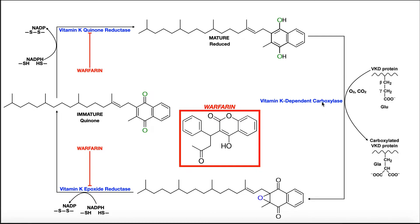Once this reaction carboxylates those clotting factors, the reduced or mature form of vitamin K is transformed into an epoxide. This epoxide is then reconverted back to the original quinone form of vitamin K by an enzyme called vitamin K epoxide reductase. Again, it uses the reducing power of either NADPH or two thiol functional groups, giving us back our quinone or immature form of vitamin K.